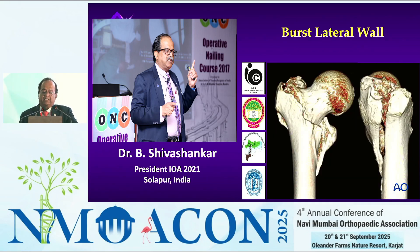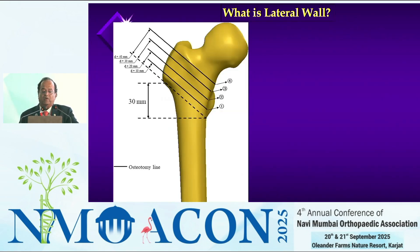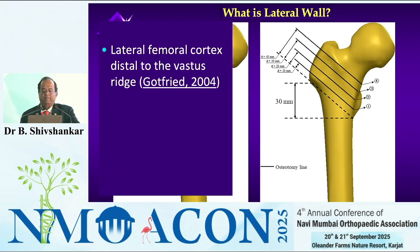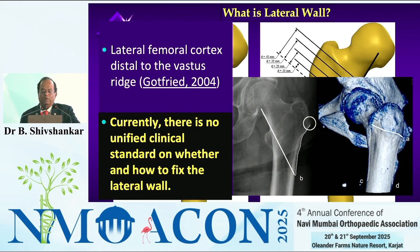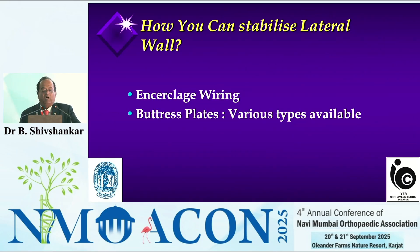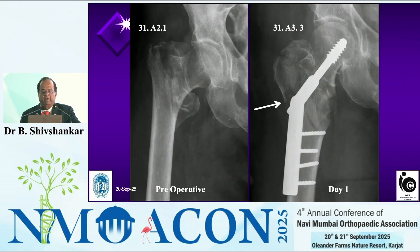Coming to the first lateral wall — what is lateral wall? From the ridge to the inferior margin of the lesser trochanter is the lateral wall. Extending the inferior calcar outside is where the lateral wall is. Some people extend it more; they include the abductor mechanism — the whole part becomes the lateral wall for them. You can stabilize the lateral wall by cerclage wiring or buttress plate of various types available.